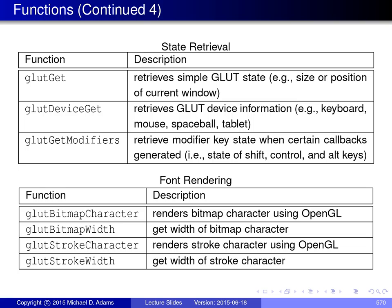GLUT provides several functions for querying state information. glut_get retrieves simple GLUT state information such as the size or position of the current window. glut_device_get retrieves information about what devices are available — for example whether there is a keyboard, mouse, space ball, or tablet. glut_get_modifiers retrieves information about the modifier key state — such as the shift, control, or alt key — when certain callback functions are invoked. For example, inside a mouse callback, the meaning of a mouse button press may change depending on whether the control or shift key is simultaneously pressed.